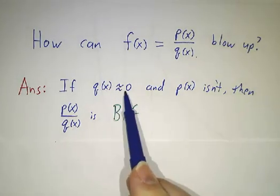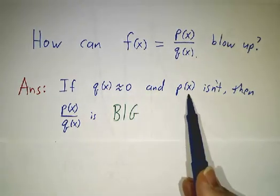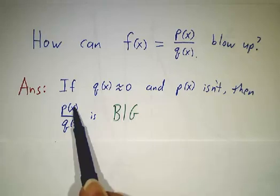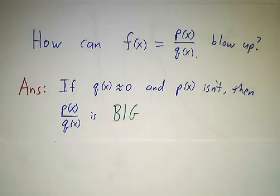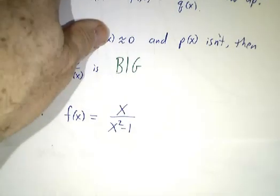So the way that you get a vertical asymptote is when the denominator goes to zero. Because whenever the denominator is close to zero and the numerator isn't, then you have a ratio, a moderate size number divided by a tiny number that's big.